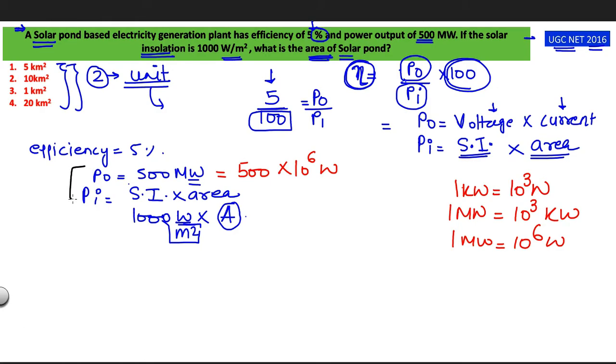Let's put all these values in the formula. So on the left hand side my efficiency is 5 percent. I am removing the percent and adding 100 in the denominator equals power output which is 500 into 10 to the power 6 watt divided by solar insulation it is 1000 watt per meter square into my area. I am writing capital A.